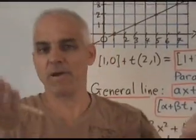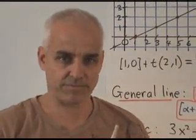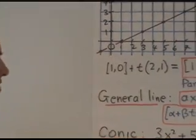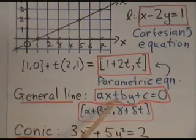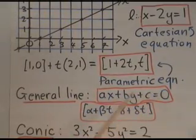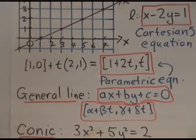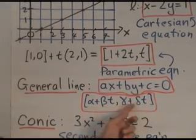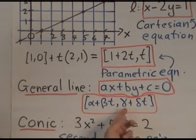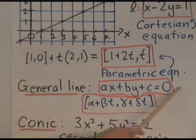The Cartesian equation and the parametric equation are in some sense dual or opposite to each other. We can generalize the situation. If we have a general line, equation Ax plus By plus C equals 0, then that equation can also be rethought in terms of (alpha plus beta t, gamma plus delta t) for some numbers alpha, beta, gamma, and delta. In other words, every linear equation can be linearly parametrized, and conversely.